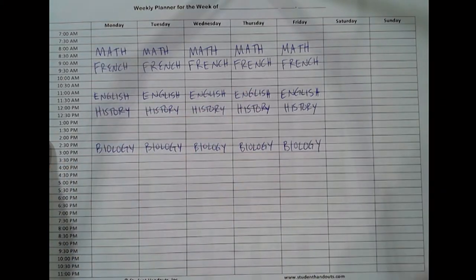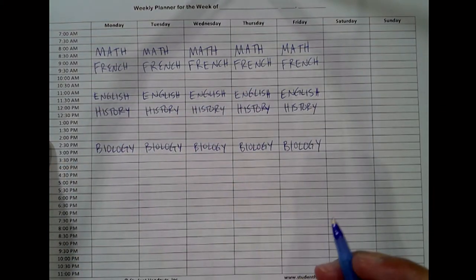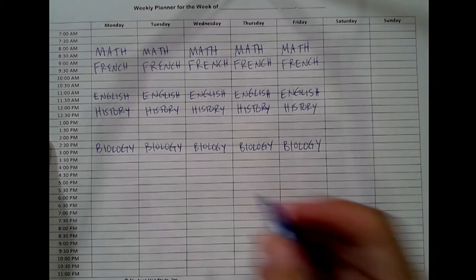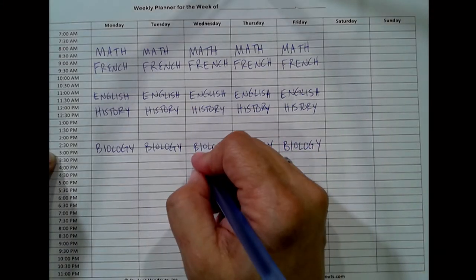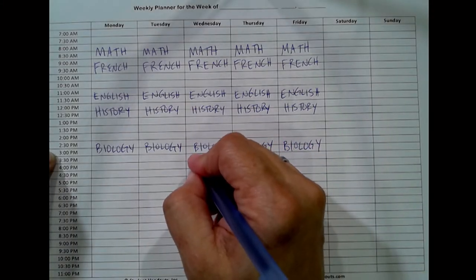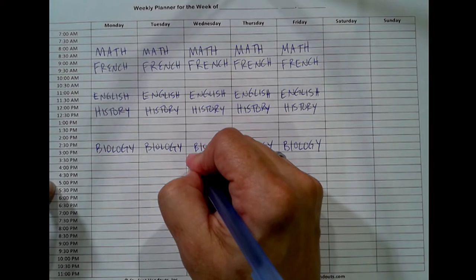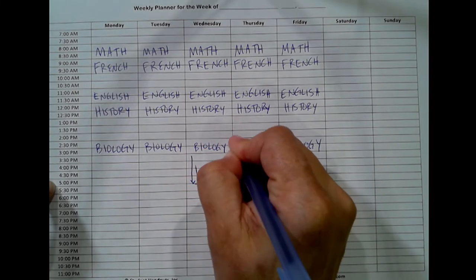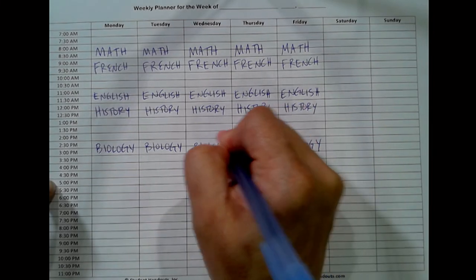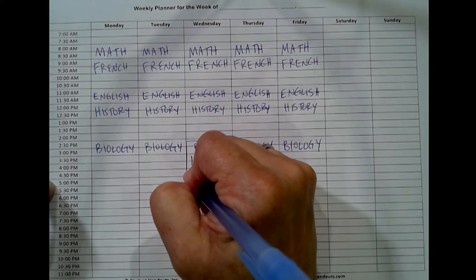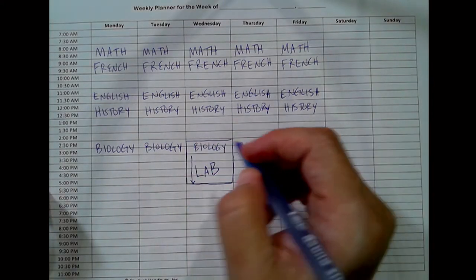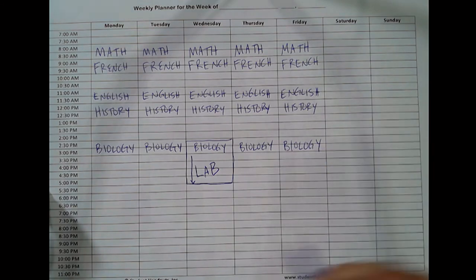Then you have English at 11, history at 12, and biology at 2:30. If we imagine that biology happens every day from 2:30 to 3:30, except on Wednesdays when you have a biology lab that also goes from 3:30 until 5:30, you need to block off a little bit more time on that day for biology.